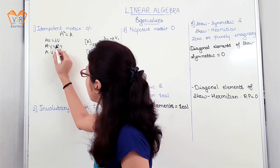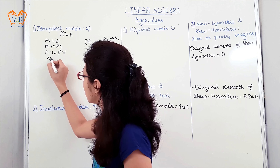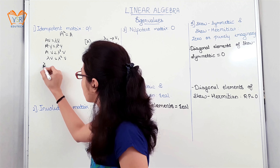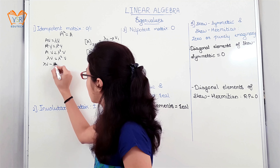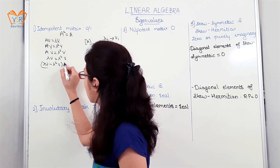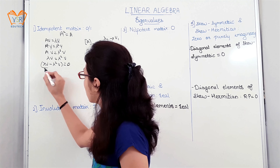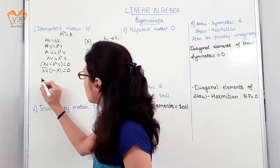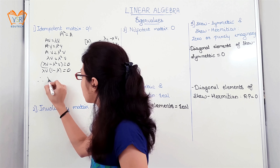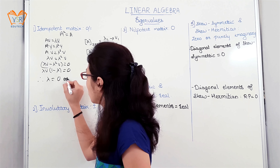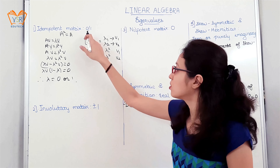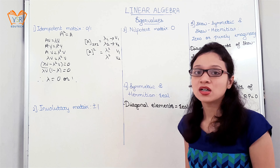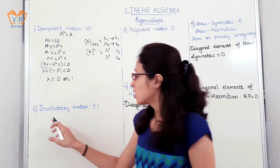Now, Av equals λv — we can solve it like this, taking common. Therefore, we can say λ equals either 0 or 1. So the eigenvalues for an idempotent matrix are either 0 or 1.